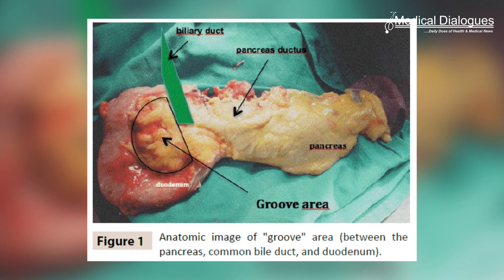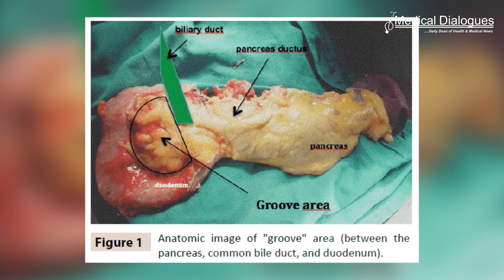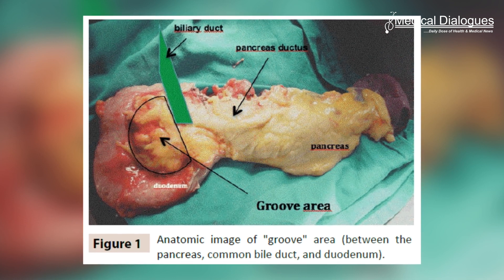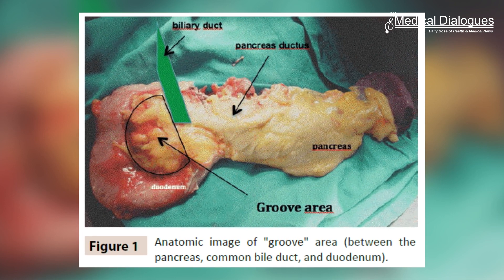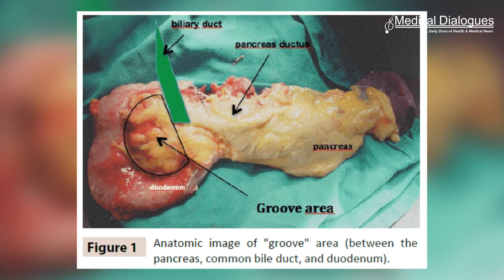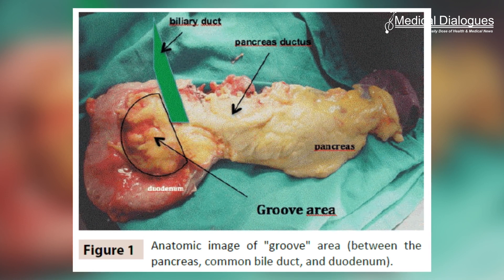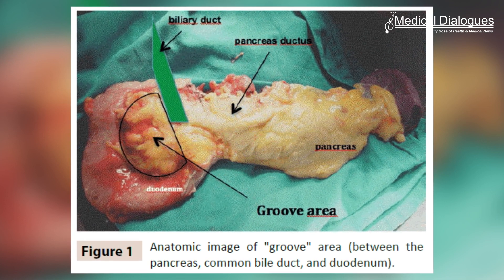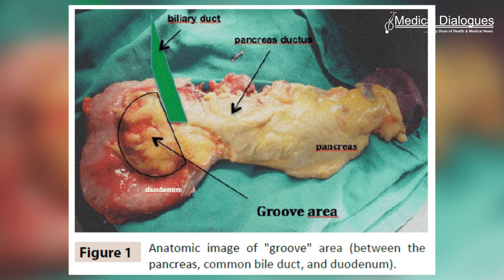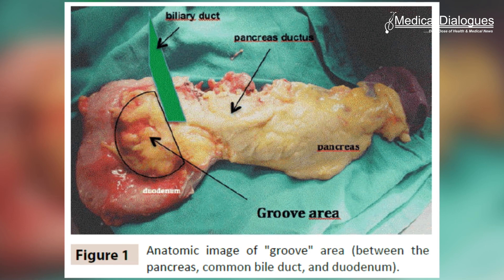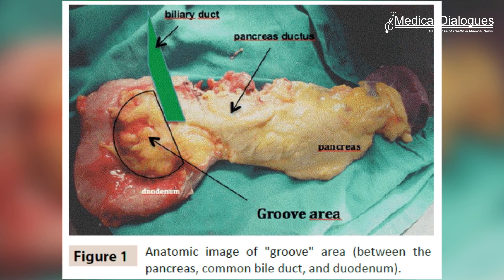Groove pancreatitis, or GP, is an unusual form of chronic segmental pancreatitis that affects the pancreatic groove between the pancreatic head, the duodenum, and the common bile duct — also known as the groove area. Most physicians are still unfamiliar with this entity, as it is a rare pancreatic condition.